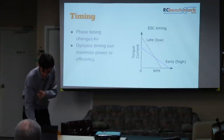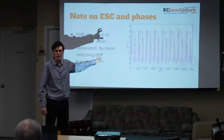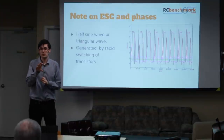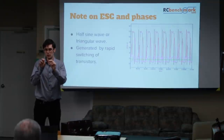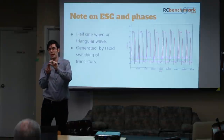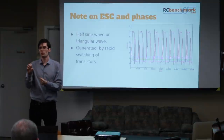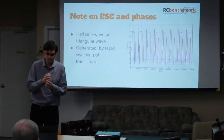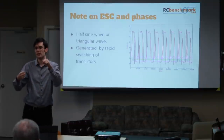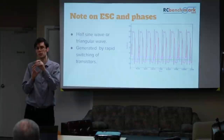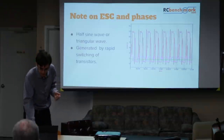The timing pulse is always in front of your magnet: the coil fires in front of the magnet and attracts it, which makes the motor turn. If you fire earlier — when the coil is further away — it increases KV but reduces torque. If you fire late — when the coil is really close to the magnet — you increase torque. That's how timing affects motor behavior.